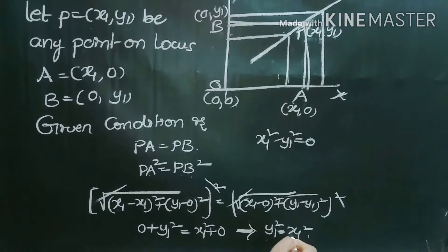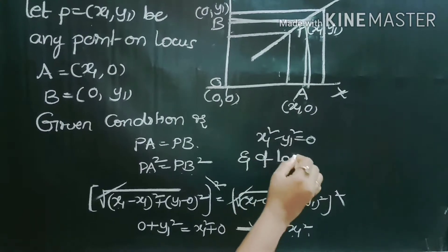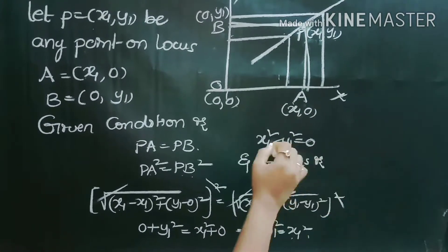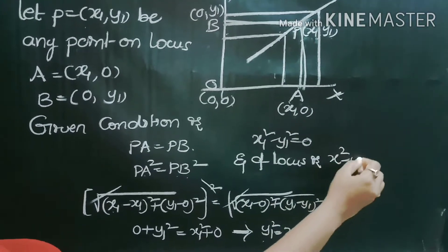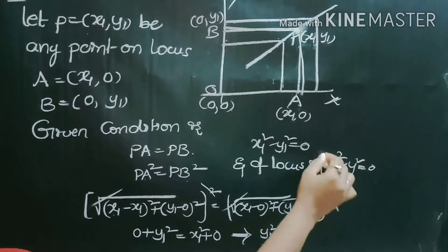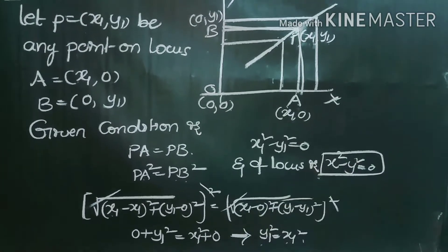This is the required answer. Therefore, the equation of locus is x² − y² = 0, replacing x1 and y1 with x and y.